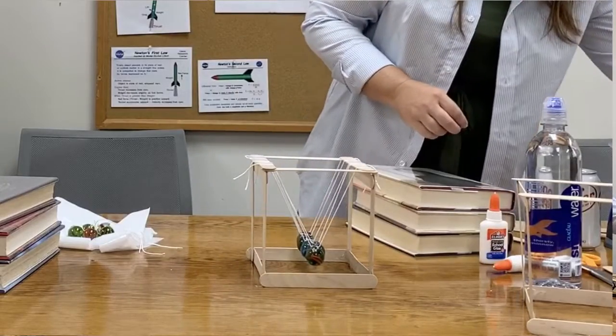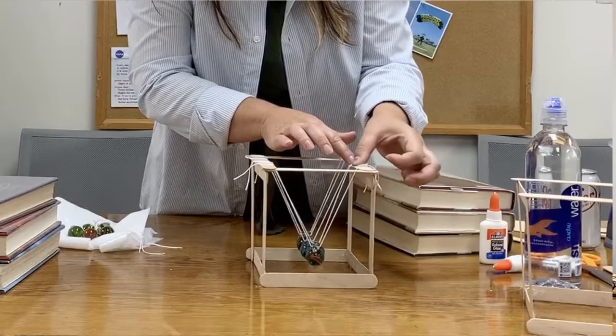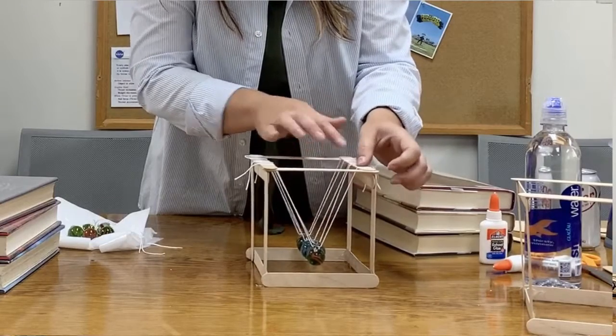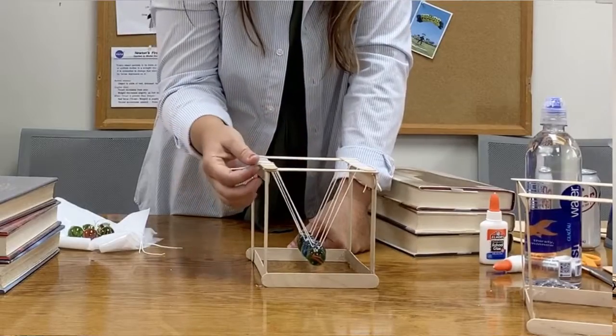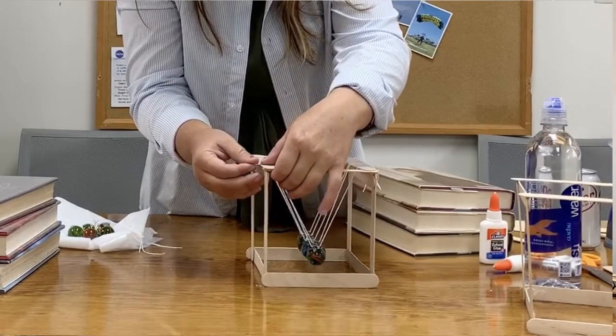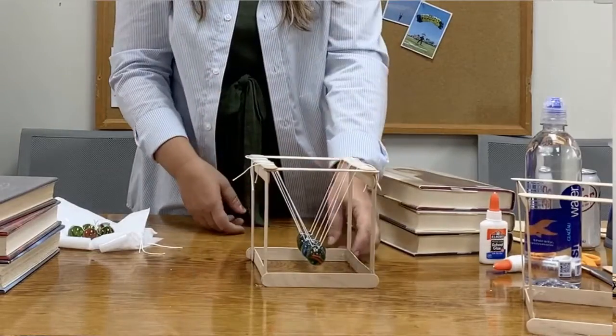One more piece of tape. Tape that down. If you feel that they're not the right height, you can hold your tape and pull your string through here, or just remove the tape and readjust it.